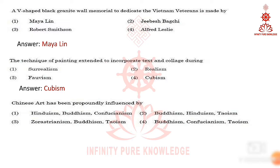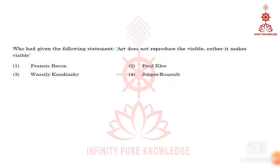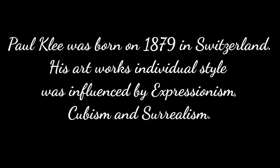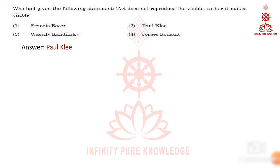Question 15: Chinese art has been profoundly influenced by Buddhism, Confucianism, and Taoism. Question 16: who gave the following statement — 'Art does not reproduce the visible; rather, it makes visible'? The correct option is Paul Klee. Paul Klee was born in 1879 in Switzerland; his individual style was influenced by Expressionism, Cubism, and Surrealism.